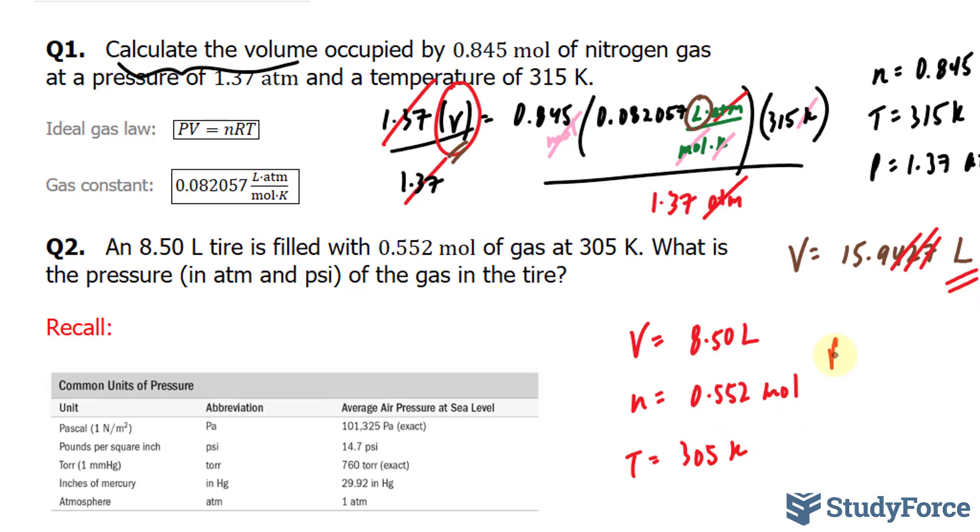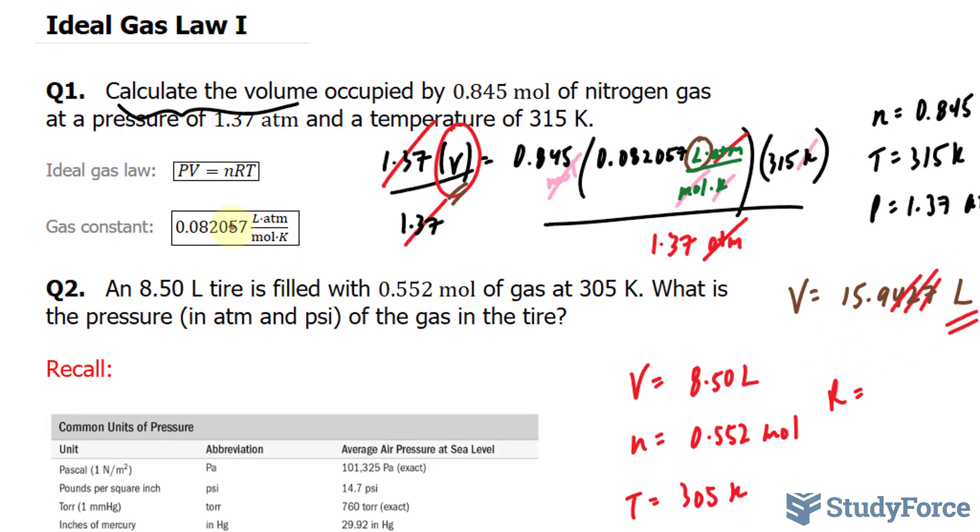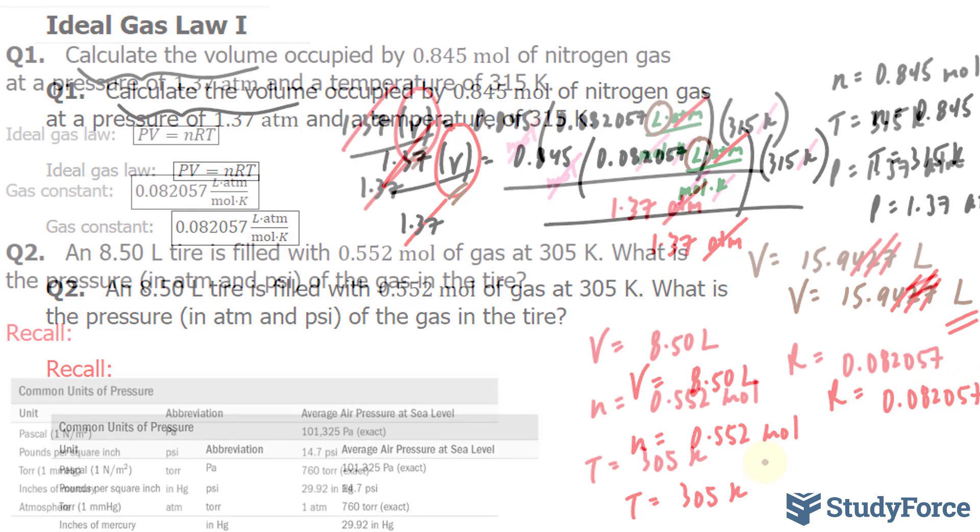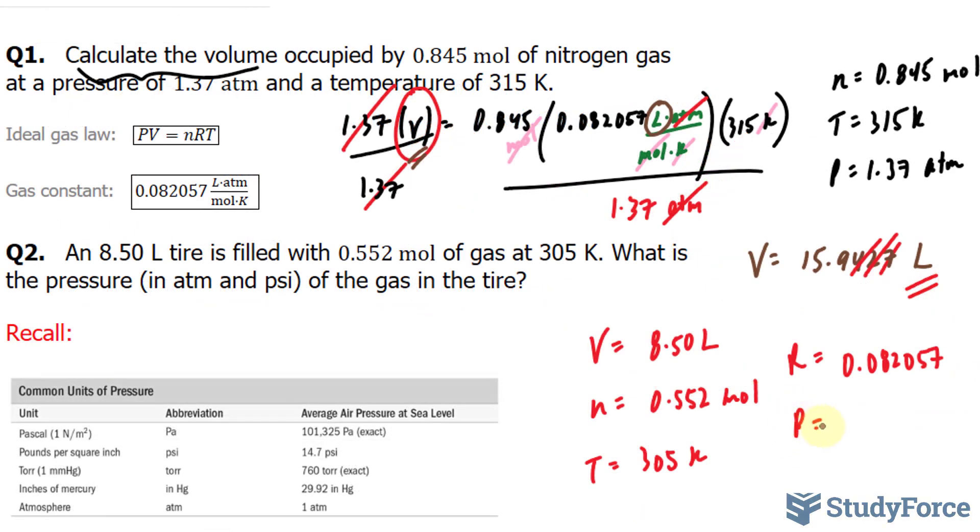Also, we know the gas constant. It's written right there. 0.082057. And we're looking for P in both ATM and PSI.